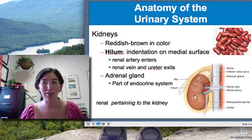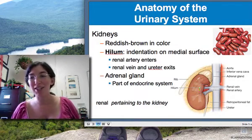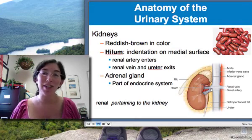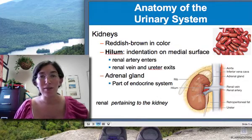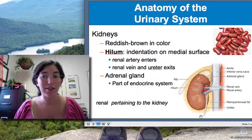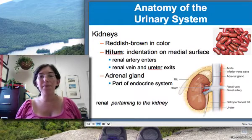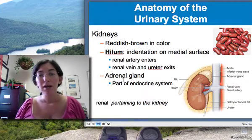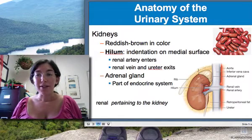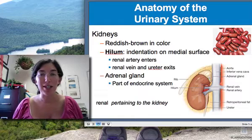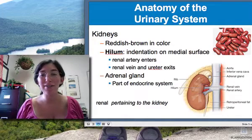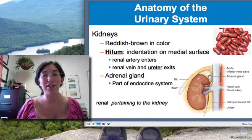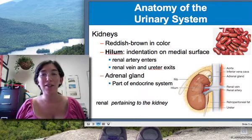A few different tubes enter the kidney through its middle — through its navel, which is referred to as the hilum, similar to the hilum of the lungs where the bronchi enter. The hilum of the kidney is where the renal veins and arteries enter, and also where the ureter exits. The adrenal gland sits on top of the kidney like a cap. It's not actually part of the urinary system — it's part of the endocrine system, which we'll save for Chapter 14.